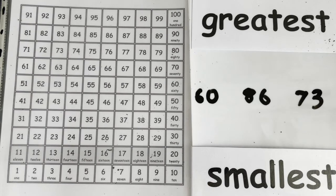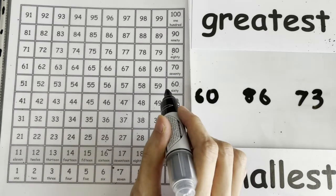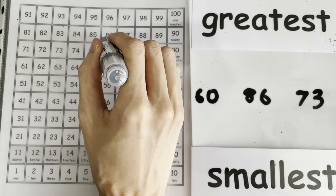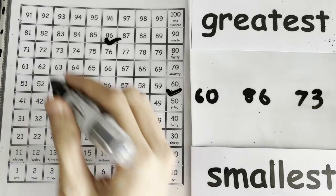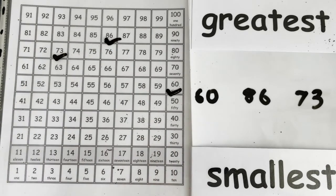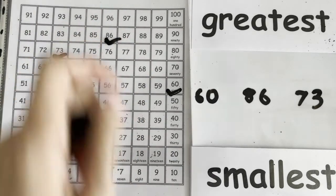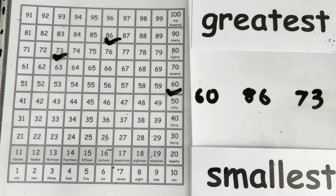Let's try another one with three new numbers. Let's find out which is the greatest and which is the smallest on the number chart. Where is 60? Here. Where is 86? Here. And where is 73? Here. Which is the smallest? The one lowest down on the chart is 60 — so 60 is the smallest. Which is the greatest? The number that is highest up is 86 — so 86 is the greatest.